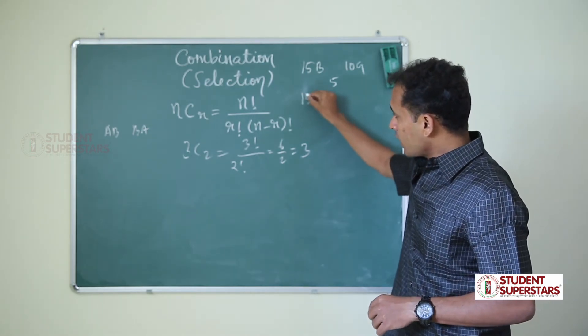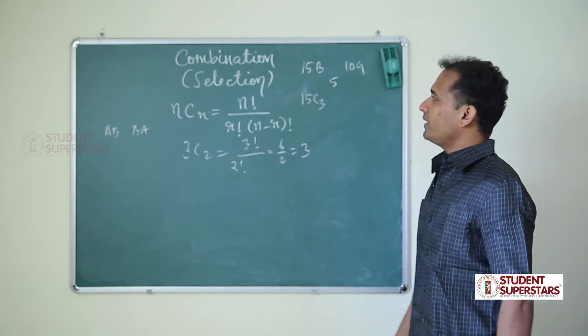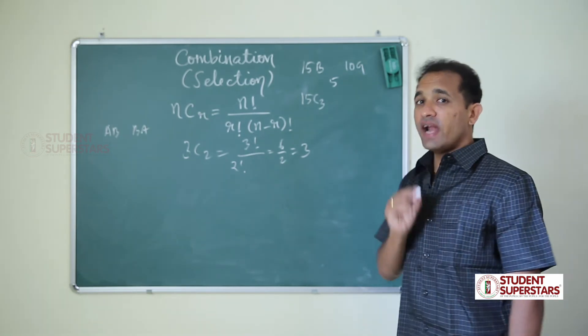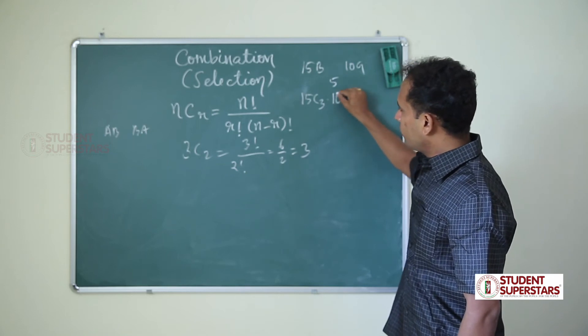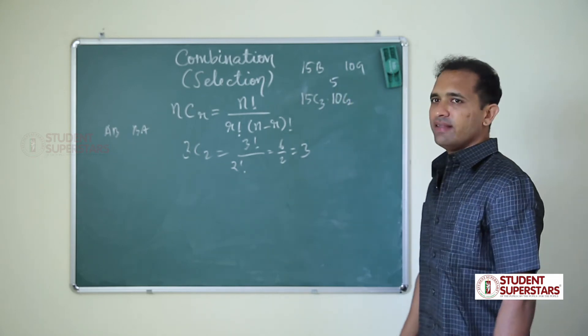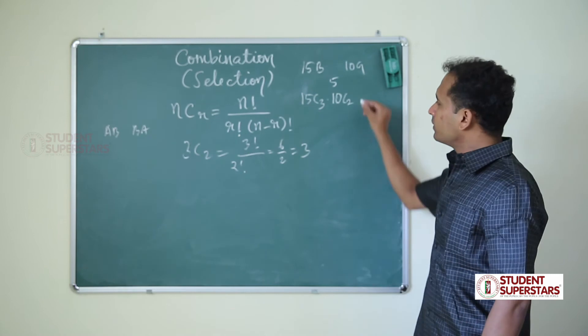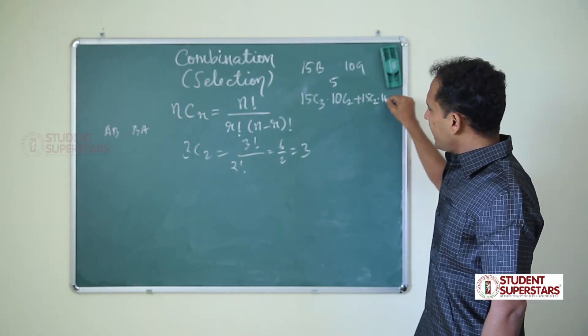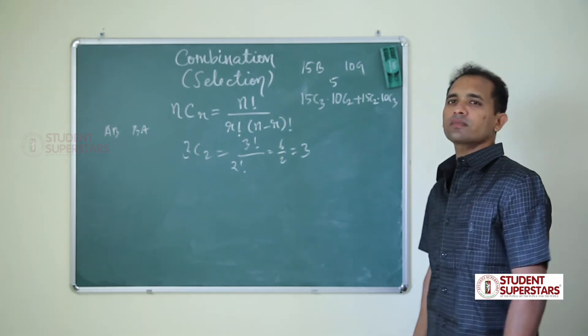We are choosing 3 boys: 15C3, 3 from 15. And whenever 'and' comes, we have to multiply. 15C3 and 10C2, or 15C2 and 10C3.